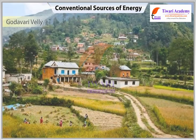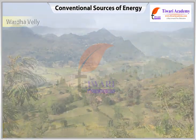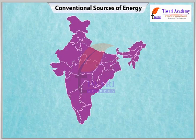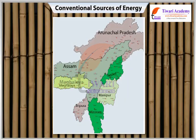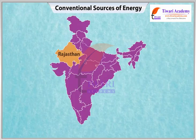The Godavari, Mahanadi, Son, and Wardha valleys also contain coal deposits. Tertiary coal occurs in the north-eastern states of Meghalaya, Assam, Arunachal Pradesh, Nagaland, and Rajasthan.